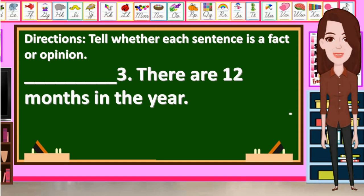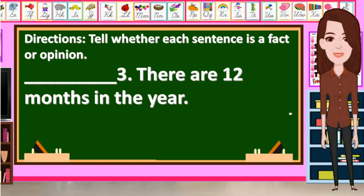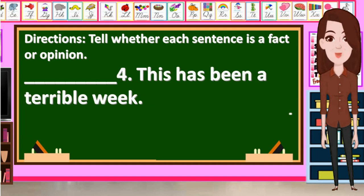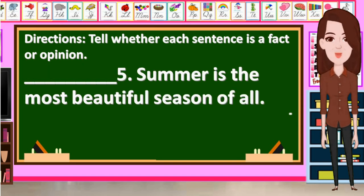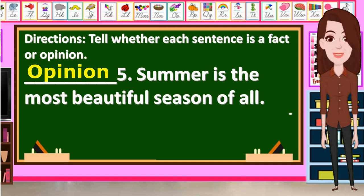Number 3: There are 12 months in a year. What do you think is the correct answer? Very good — the answer is fact. Number 4: This has been a terrible week. And the answer is opinion. Number 5: Summer is the most beautiful season of all. The correct answer is opinion.